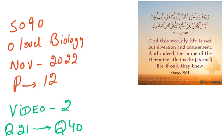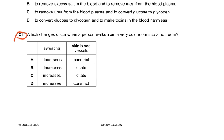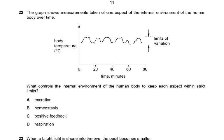Question 21: Which changes occur when a person walks from a very cold room into a hot room? Sweating will increase and skin blood vessels will dilate. Skin blood vessels means skin arterioles, not capillaries. Capillaries cannot dilate because they have no muscle in the wall.